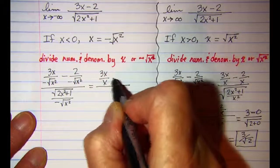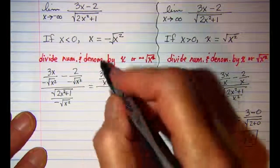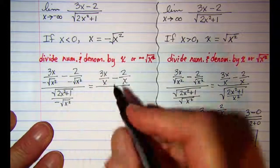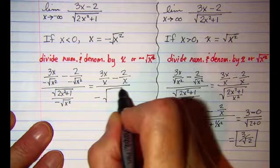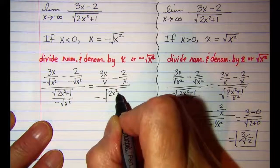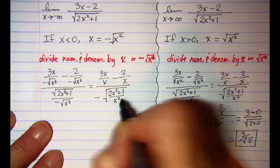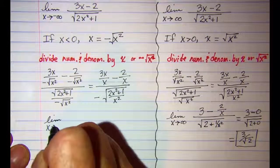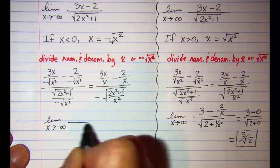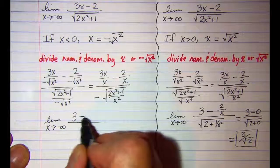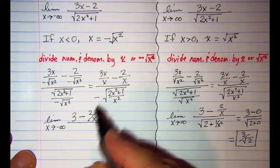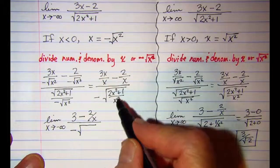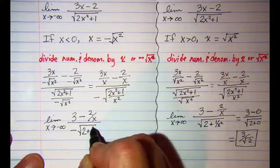This fraction simplifies so that in place of negative x² we put x, giving 3x over x. In place of negative x² again we get 2 over x. The denominator brings the negative in front and becomes a single radical: negative square root of (2x² + 1) over x². So we're finding the limit as x approaches negative infinity of 3 minus 2 over x, over negative square root of 2 plus 1 over x².